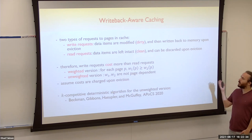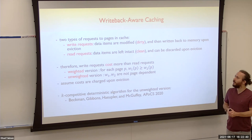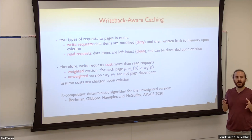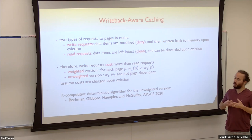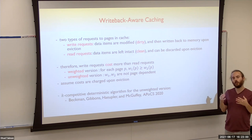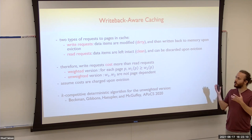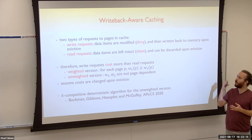Today we're going to talk about writeback-aware caching, which is a generalization of weighted caching and regular caching. There are two types of requests: read requests and write requests. Read requests keep the data as it is, while write requests change the data in each page. Whenever we have a write request for a page, we change the page within the cache, and when we want to evict the page back to memory, we need to modify the slow memory with the modified data. So we distinguish between evictions for dirty pages and evictions for clean pages.